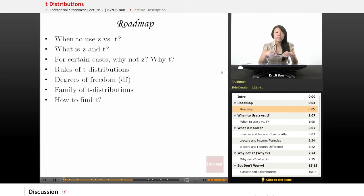Previously we learned that there are different situations where you use Z and when you use T. Today we're going to talk about when to use Z versus T, and then we're going to break down and recognize what is Z and T? What do they have in common and what's different about them? And for certain cases, we're going to ask the question, why not Z? Why T instead? What doesn't Z have? What's deficient about Z?